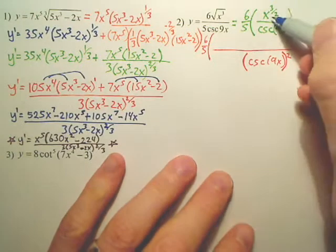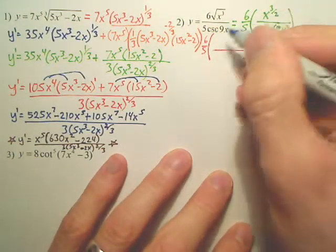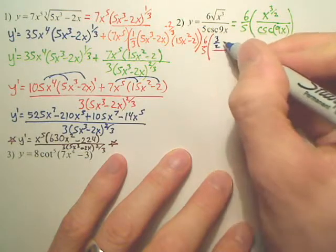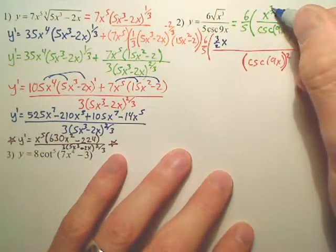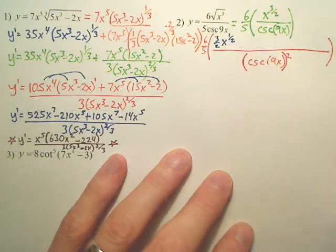All right. The inside. Derive the first. x to the 3 over 2. It's going to be 3 over 2 x to the, subtract 1 from that, you get 1 half.